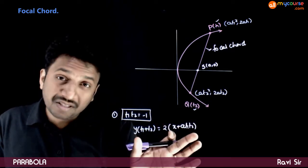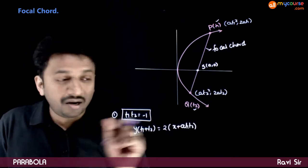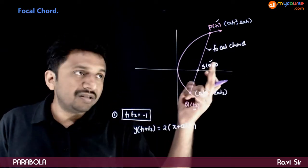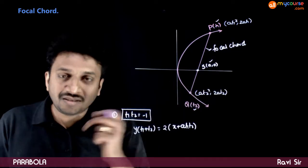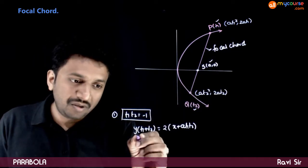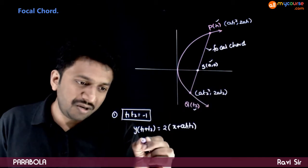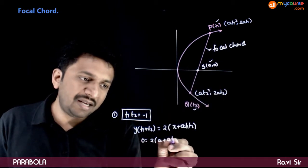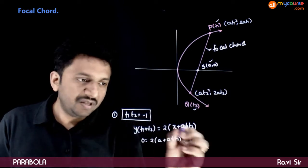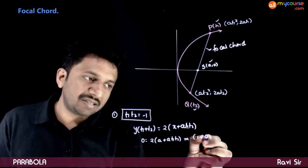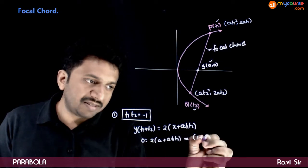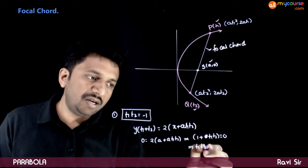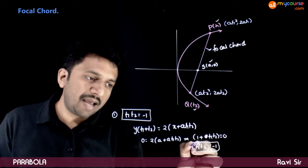Now, if this chord has to be a focal chord, this chord has to satisfy the point a comma 0. So if you put a comma 0 in this chord, you get y is 0. So, 0 is equal to 2 times x is a plus a t1 t2. This implies 1 plus t1 t2 has to be equal to 0, and t1 t2 is equal to minus 1.